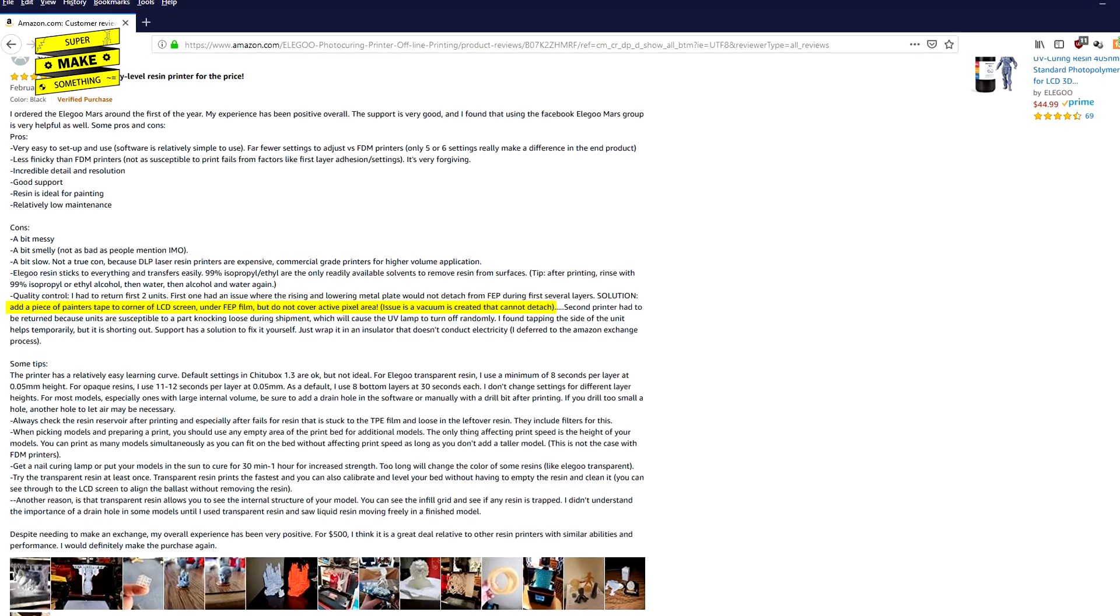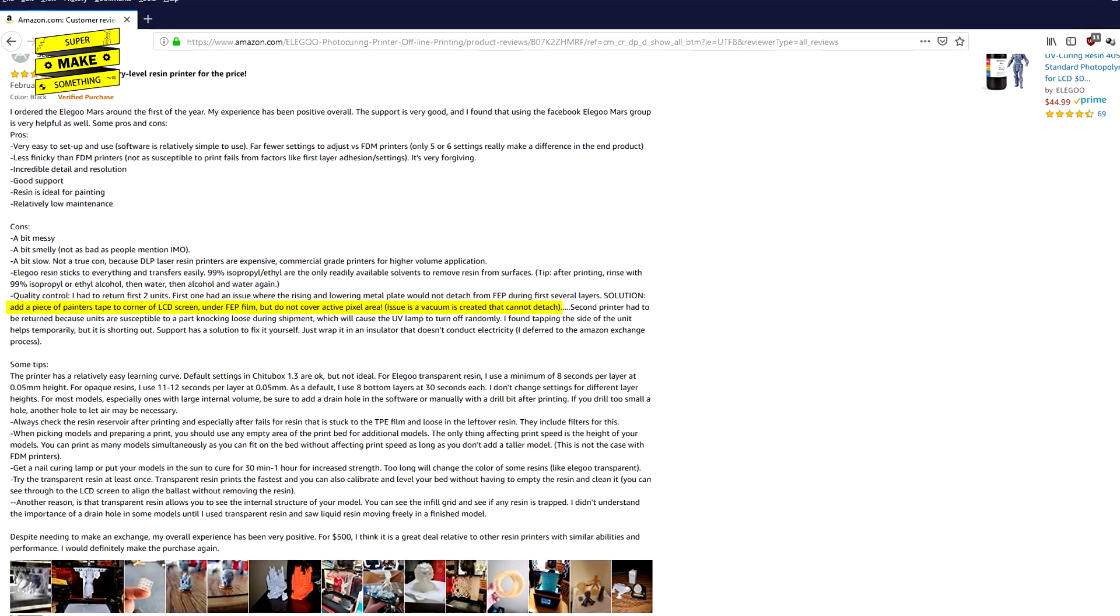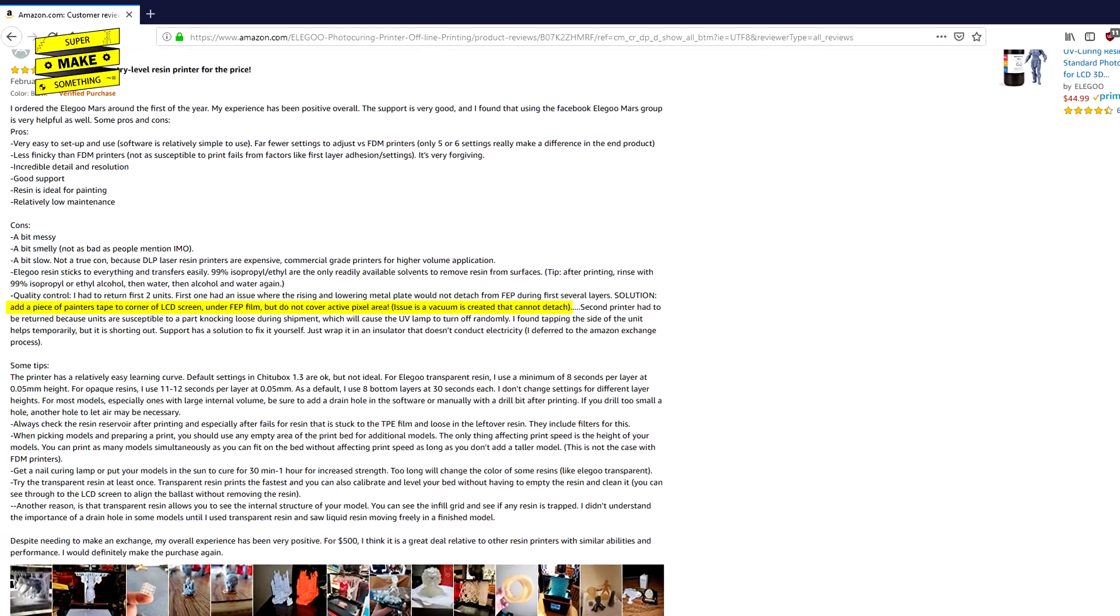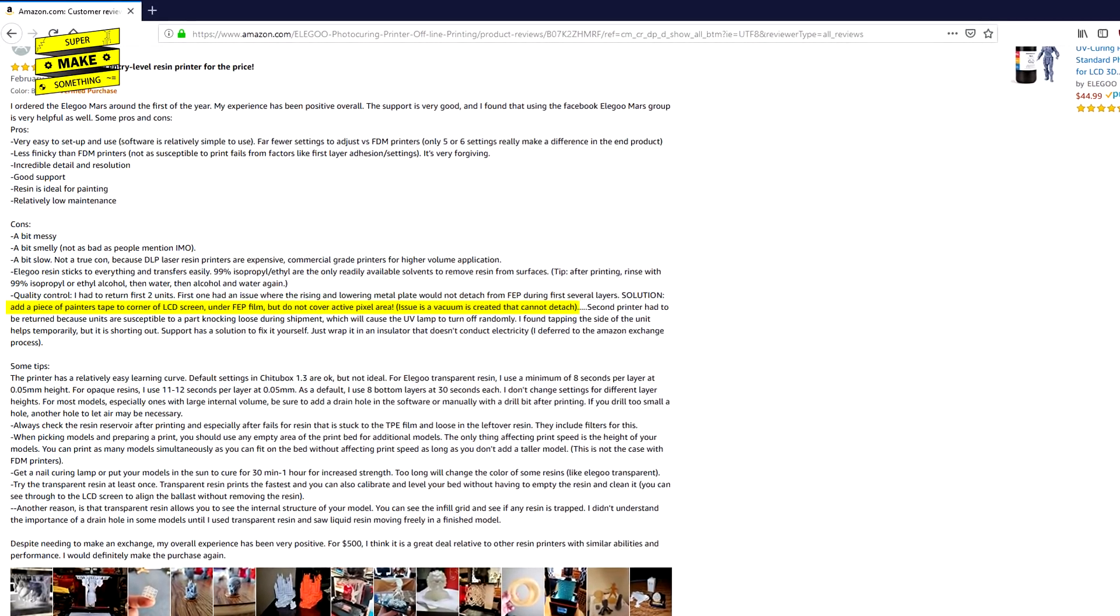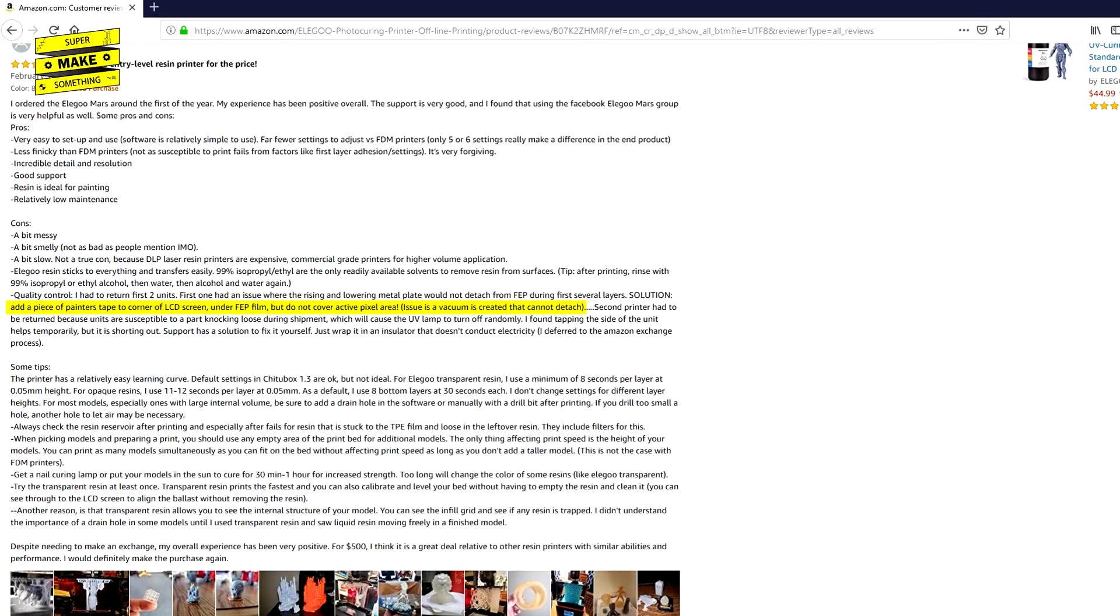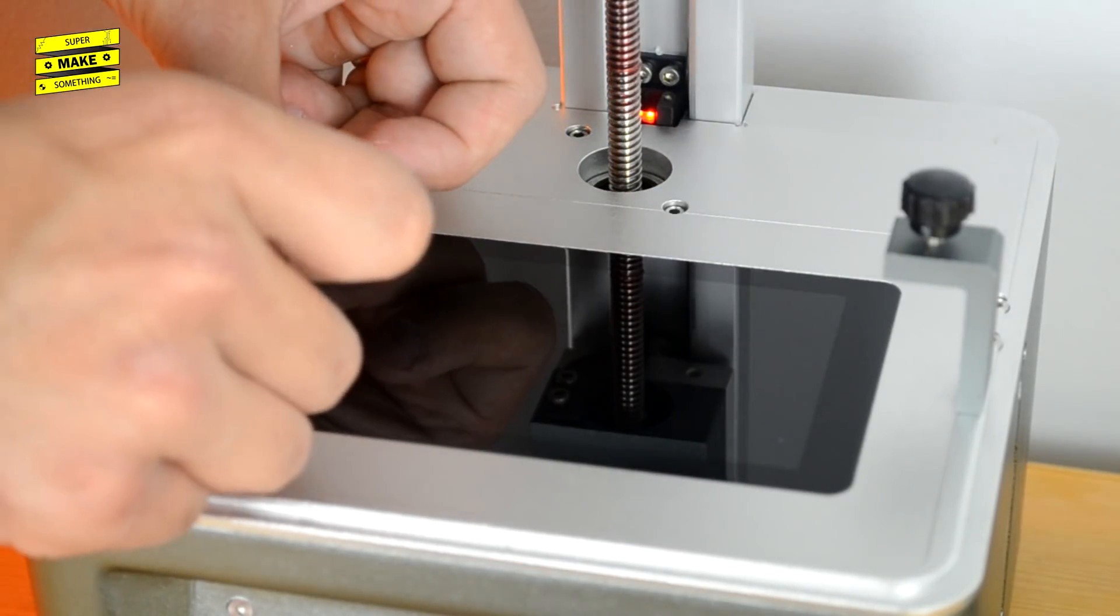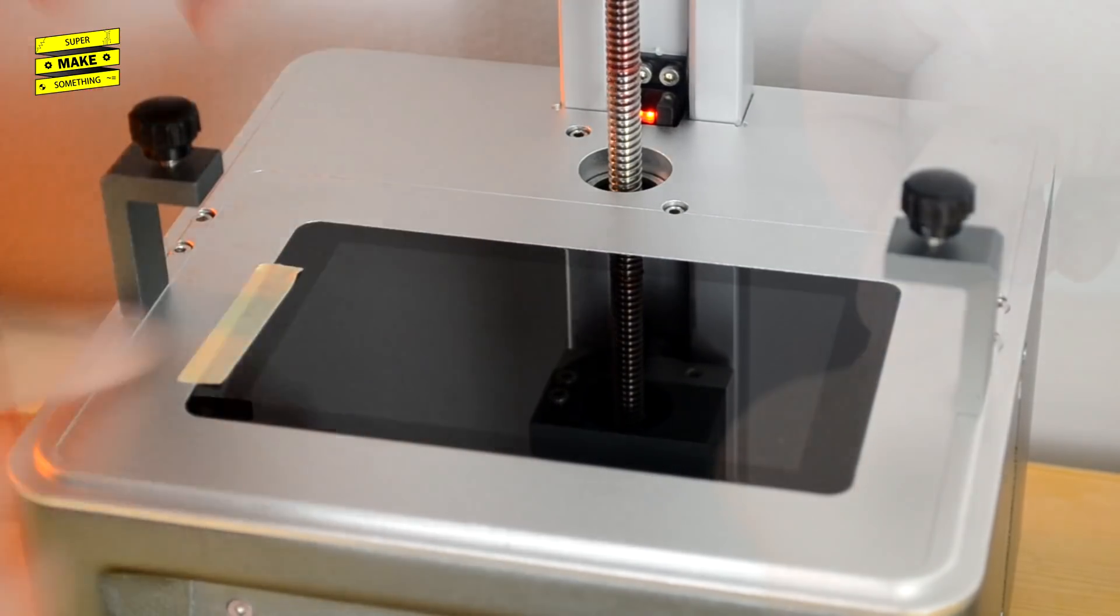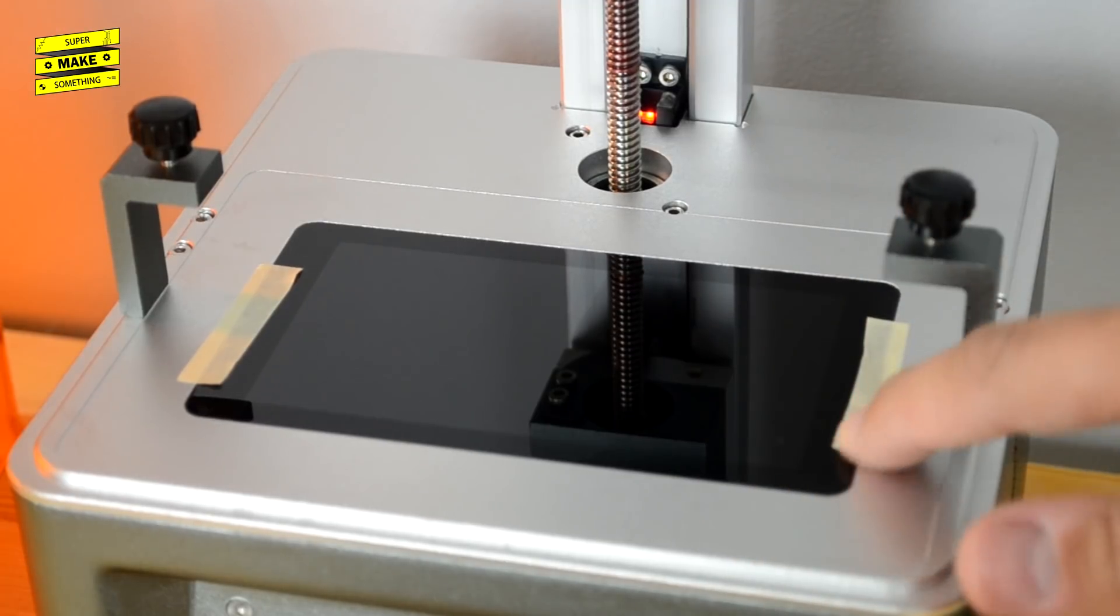Based on comments that I found online, it seems that the plastic FEP film can sometimes form a vacuum with the LCD screen during the printing process, causing it to get damaged when the print vat is removed from the printer. To account for this, I added small strips of masking tape over the LCD screen's bezel, which will give the vat sufficient additional clearance to keep this from happening.